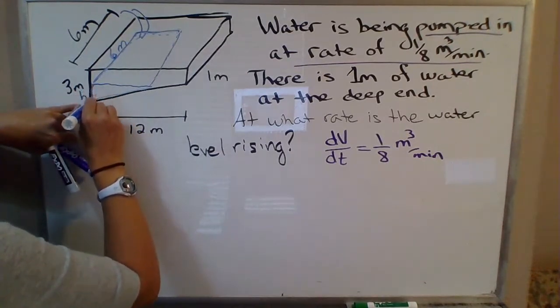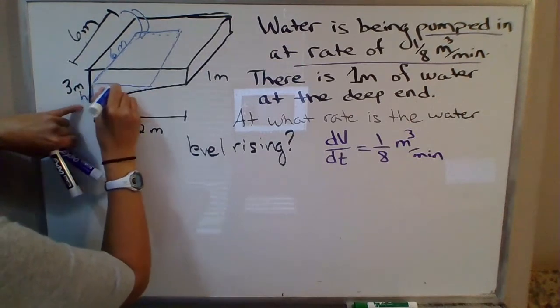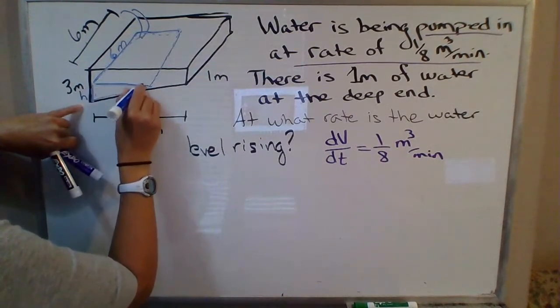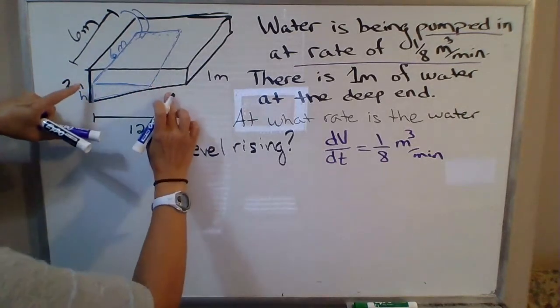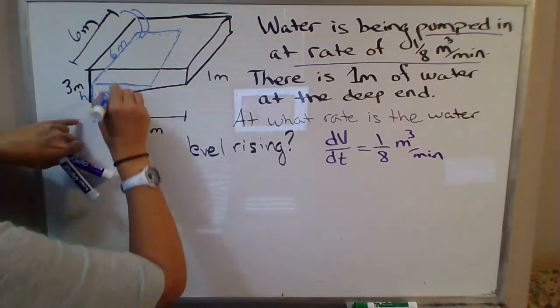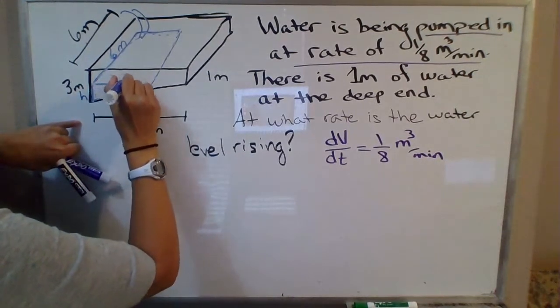You're not going to have the water all piling up on one side of the pool. This dimension here is going to be in a state of change as the water is pumped in, as will this dimension here. As the water is pumped in, the water level rises, you're going to have a taller and taller triangle over here. So we need a variable for this dimension here, I'm going to call it w for width.